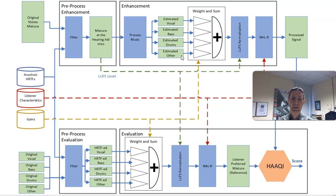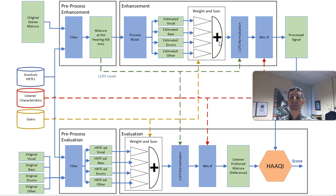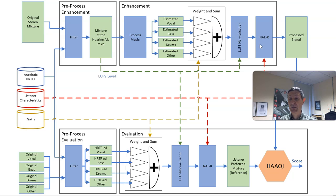We have a set of gains which tell you what to do — for example, make the vocals 6dB louder, make the bass 6dB quieter. You apply those gains to the vocals, bass, drums, and other, then sum them up to get a stereo version of the signal with the music balance changed. The NALAR block is a standard hearing aid amplification which we provide. Because our evaluation also uses that block, when you apply the challenge you're better off just leaving it as is. At the endpoint, you have your processed signal coming out of the hearing aids, which would go down the ear canal of the listener if there were a real listener involved.